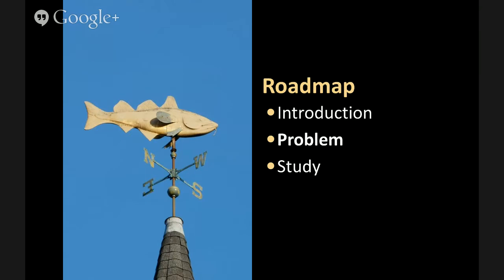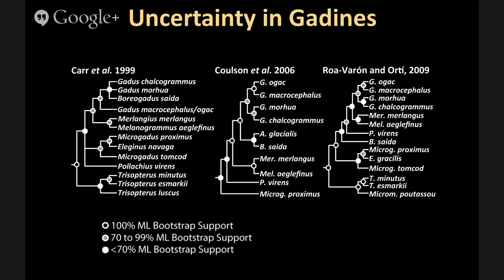This brings us to the problem of resolving the biogeographic history of codfishes. Even though these species are economically important and well studied, there is still disagreement on the relationships among species. I'm showing three different phylogenies generated in recent years: Carr and colleagues (1999) used two mitochondrial genes; Colson and colleagues (2006) used the full mitochondrial genome and got a different answer; and Roa-Verona and Ortiz used a mix of mitochondrial and nuclear markers, sampled at very different densities.